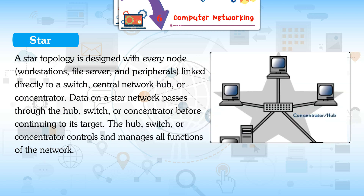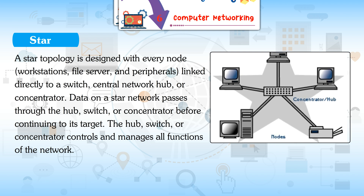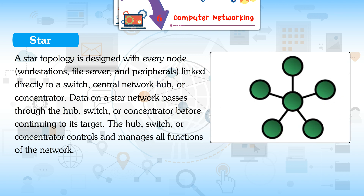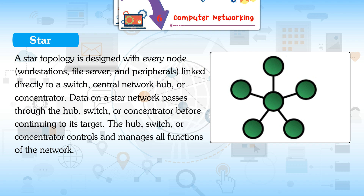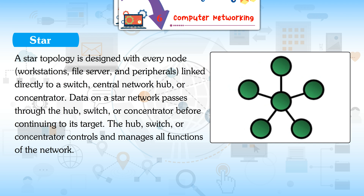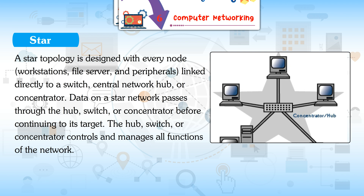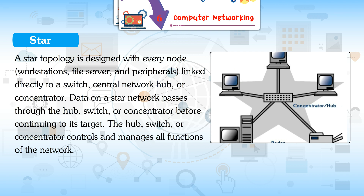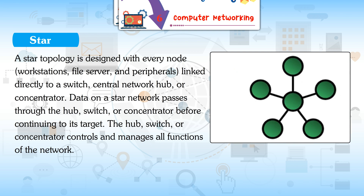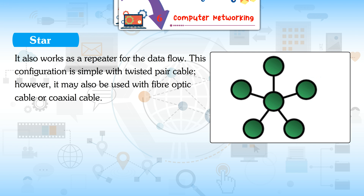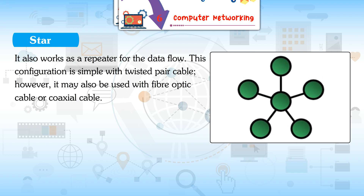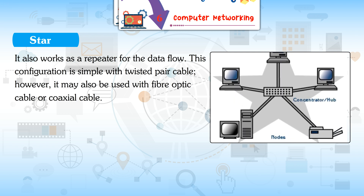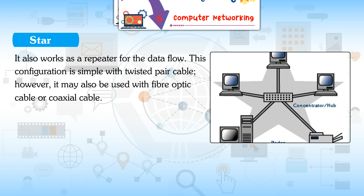Star topology is designed with every node — workstations, file server, and peripherals — linked directly to a switch, central network hub, or concentrator. Data on a star network passes through the hub, switch, or concentrator before continuing to its destination. The hub, switch, or concentrator controls and manages all functions of the network and also works as a repeater. This configuration is common with twisted pair cable but may also use fiber optic or coaxial cable.